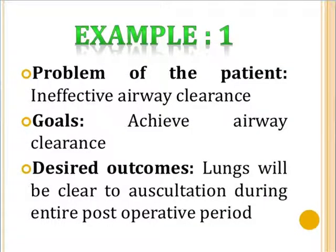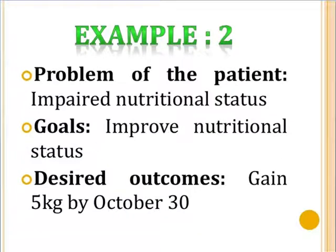For example, if the patient's problem is ineffective airway clearance, the goal is to achieve airway clearance. The desired outcome is: lungs will be clear to auscultation during the entire post-operative period. A second example: if the patient's problem is impaired nutritional status, the goal is improved nutritional status, and the desired outcome is a specific action — for example, gain 5 kg by October 30th.